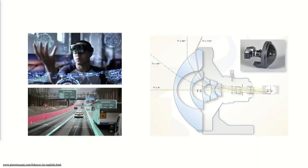If we take a fisheye lens, for example — if we want to get a hemispherical field of view, usually we have to stack about eight to ten lenses together. Those are precisely polished lenses assembled into a very complicated, very bulky module.